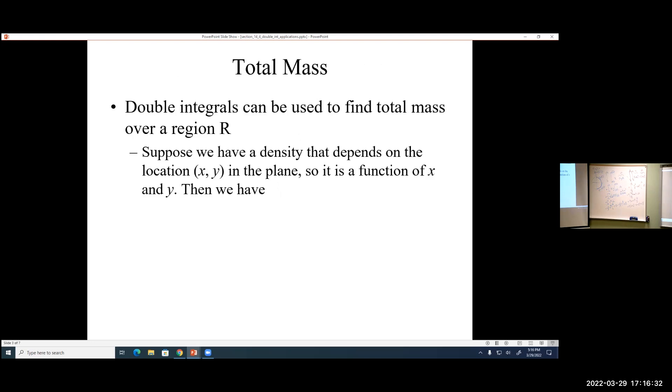Total mass. So if you have a varying density over your surface, then integrating over that density would give the total mass of that surface. Very similar idea to what you saw in Calc 2.